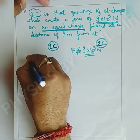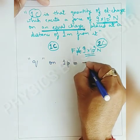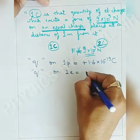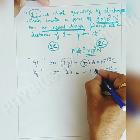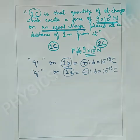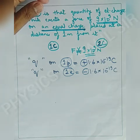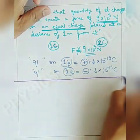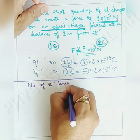The charge on one proton is Q = +1.6 × 10⁻¹⁹ coulomb, and the charge on one electron is −1.6 × 10⁻¹⁹ coulomb. The positive sign represents the charge on a proton and the negative sign represents the charge on an electron. However, when using this value in a formula, the negative sign is not taken into consideration.